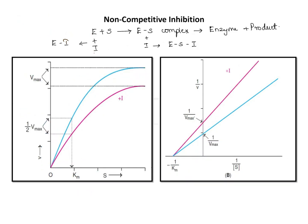In non-competitive inhibition, the inhibitor binds at a site different from the substrate binding site on the enzyme. Binding of the substrate to the enzyme is unaffected, so Km remains the same. However, the velocity is reduced because the inhibitor binding causes a conformational change in the enzyme, reducing its catalytic activity. Plotting on a normal Michaelis-Menten curve gives two curves showing a difference in Vmax but similarity in Km.